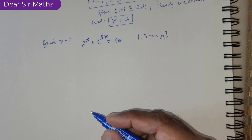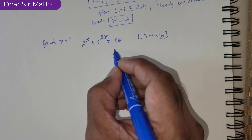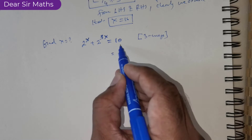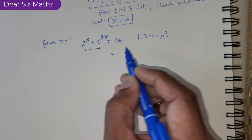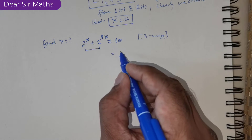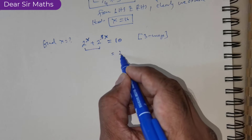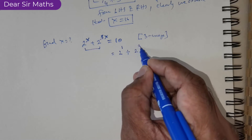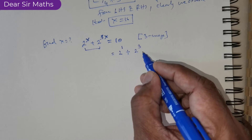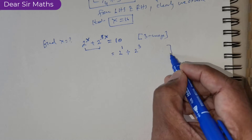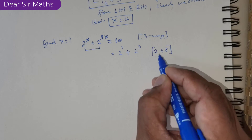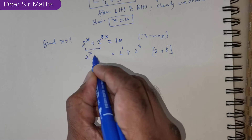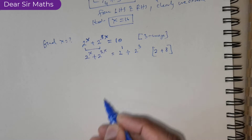The first way is to rewrite 10 as a sum of quantities involving 2. Clearly I can write 10 as 2 raised to the power of 1 plus 2 raised to the power of 3. Now 2 raised to the power of 3 is 8 and 2 raised to the power of 1 is 2. On the left side we have 2 raised to the power of x plus 2 raised to the power of 3x.